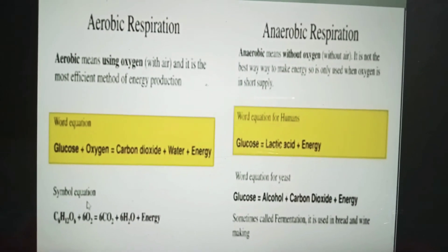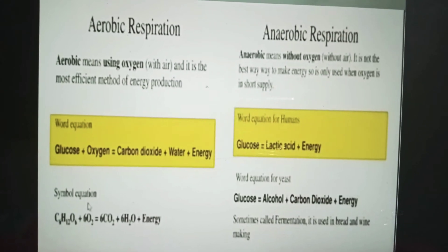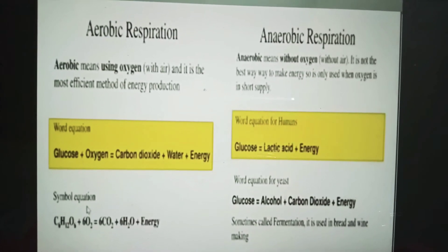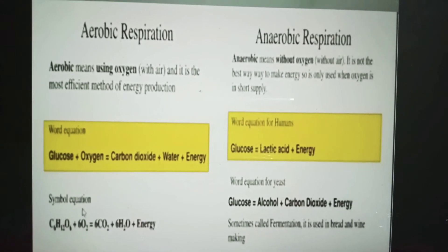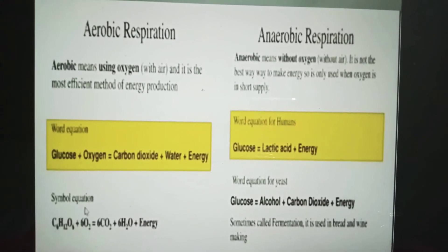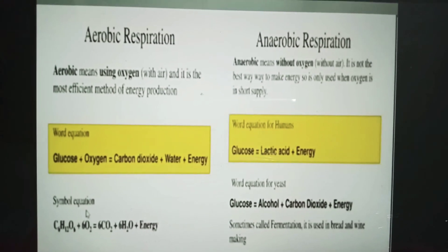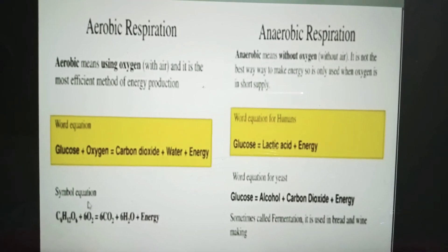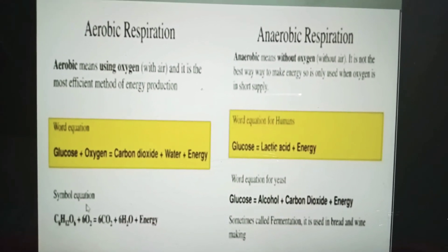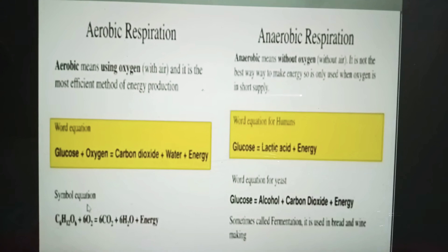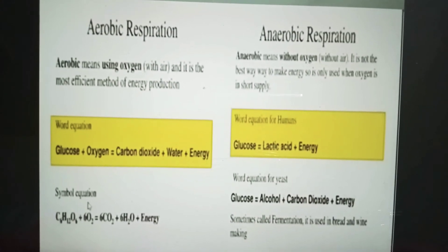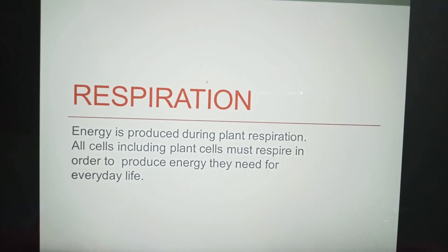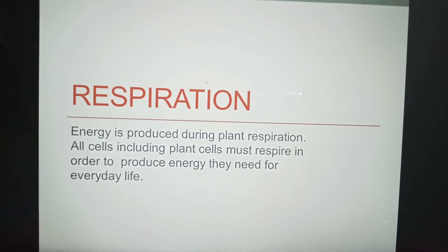Anaerobic respiration means without oxygen, which means without air. It is not the best way to make energy, so it is only used when oxygen is in short supply. The word equation for anaerobic respiration in humans would be: glucose gives lactic acid plus energy.